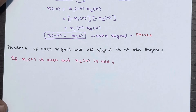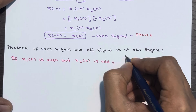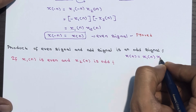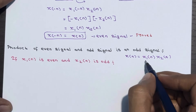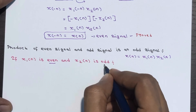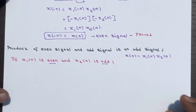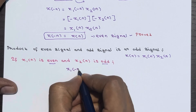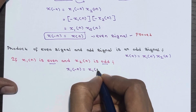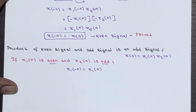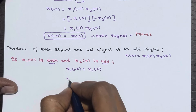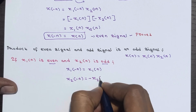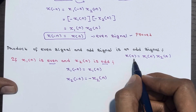We again have x(n) = x1(n) · x2(n). Now assume x1(n) is an even signal and x2(n) is an odd signal. Since x1(n) is even, we can write x1(-n) = x1(n). Since x2(n) is odd, we can write x2(-n) = -x2(n).